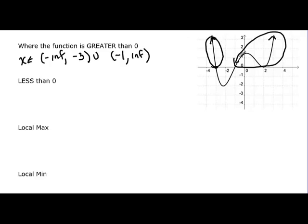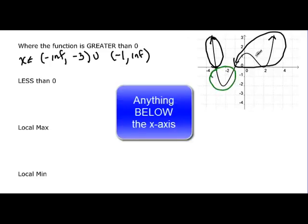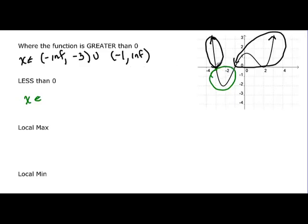Now they want to know where it is less than 0. So that would be all of this here, and that's the only part that's less than 0. So we would say x is an element of the interval from negative 3 to negative 1.